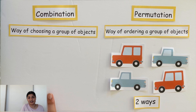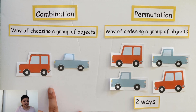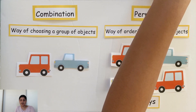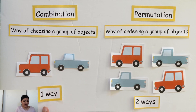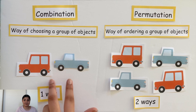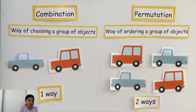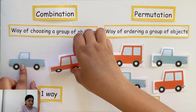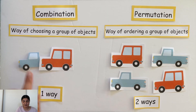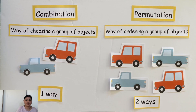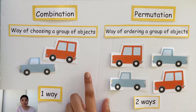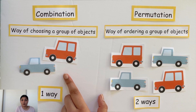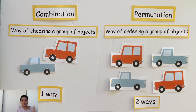Now let's find the number of combinations to arrange these cars. The number of combinations would be only one way, because remember, the order does not matter. So these cars can be in this order, this order, or even on top of each other. Since the order does not matter, all we have to do is group these two cars. And since there's only one way to group them, there's only one combination.